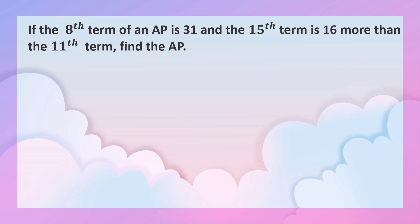Here we are given the 8th term and the 15th term, which is 16 more than the 11th term. We have to find the AP. We know that the general term of an AP is a_n equals a plus (n minus 1) times d.